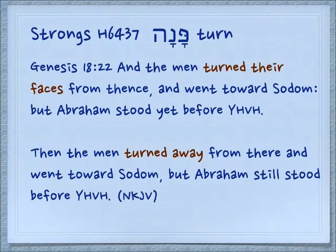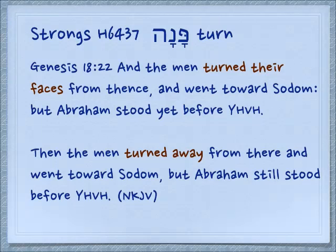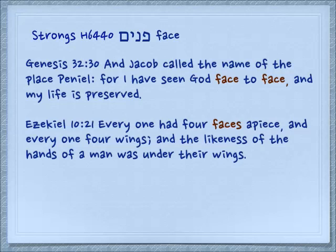This root, pana, is also related to the word for face. And so we see an interesting thing in the King James in Genesis 18.22. It is translated 'the men turned their faces from thence,' but in the New King James it just says 'they turned away.' So the King James relates to the idea of the word for face, which in Hebrew is panim. It looks plural, it is plural — it is both singular and plural and has no singular form. It is always in a plural form.